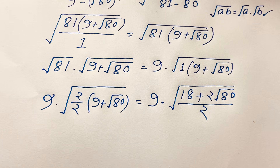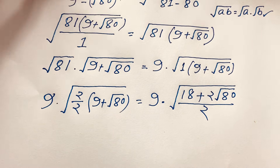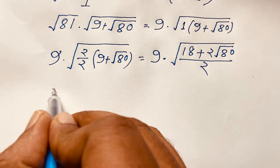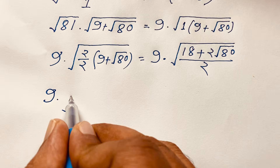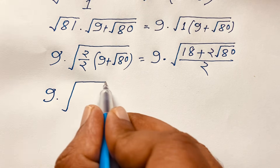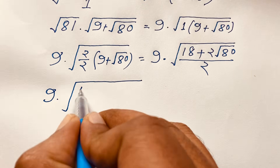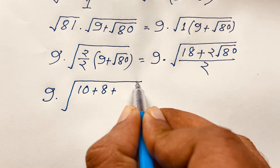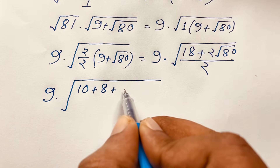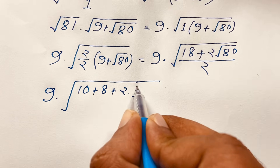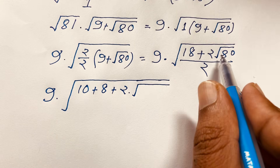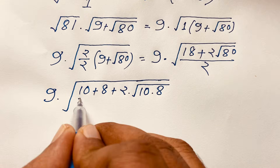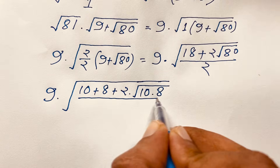At this point, we rewrite 18 as 10 plus 8, and 80 as 10 times 8. So the expression becomes square root of (10 plus 8 plus 2 times square root of 10 times 8), all over 2.